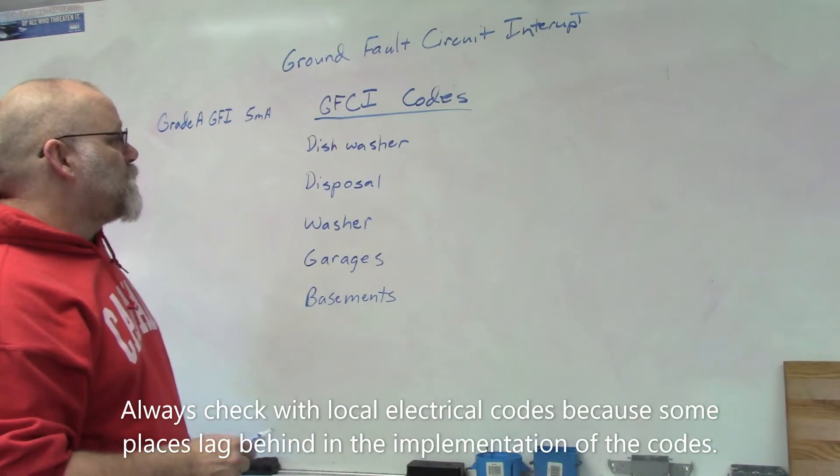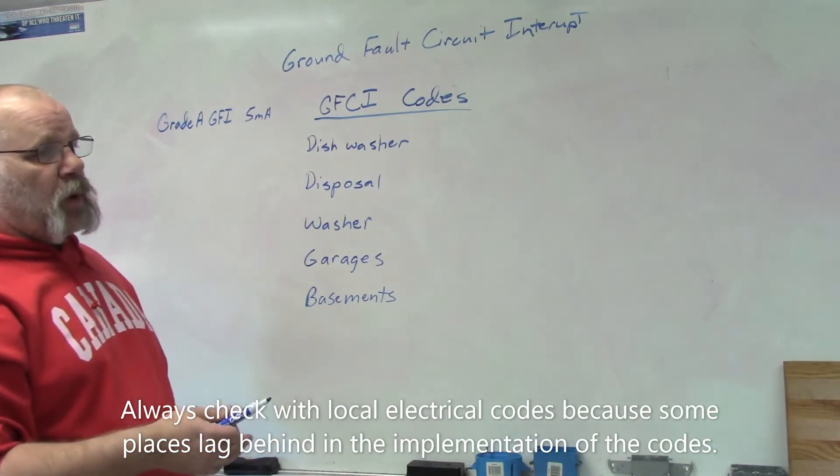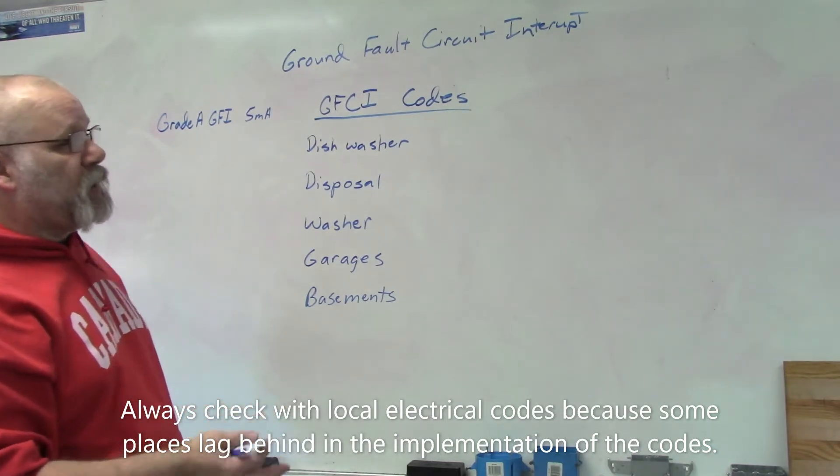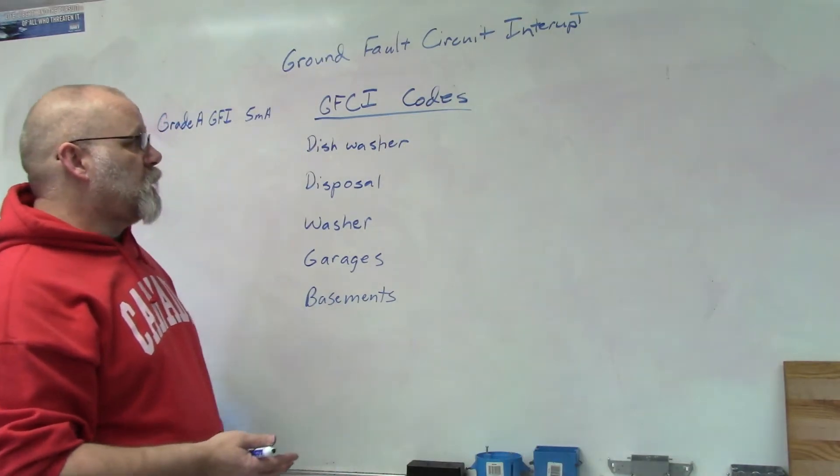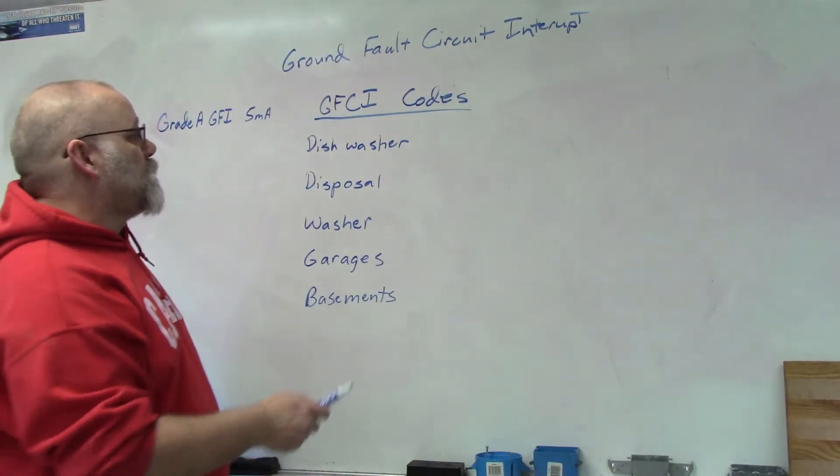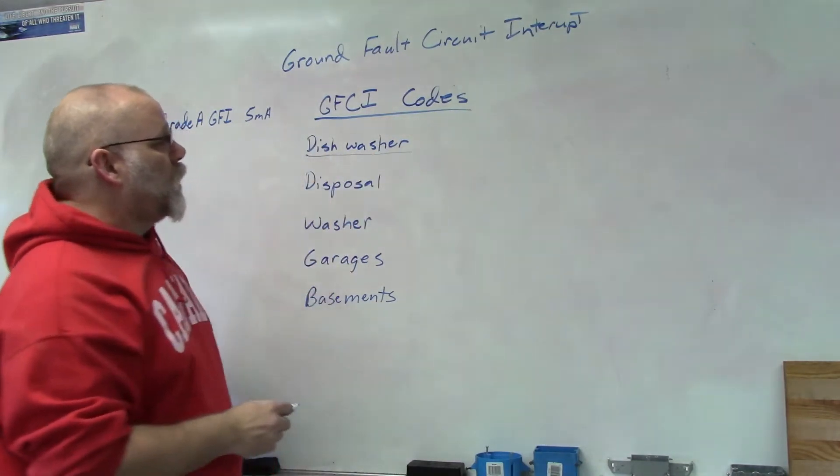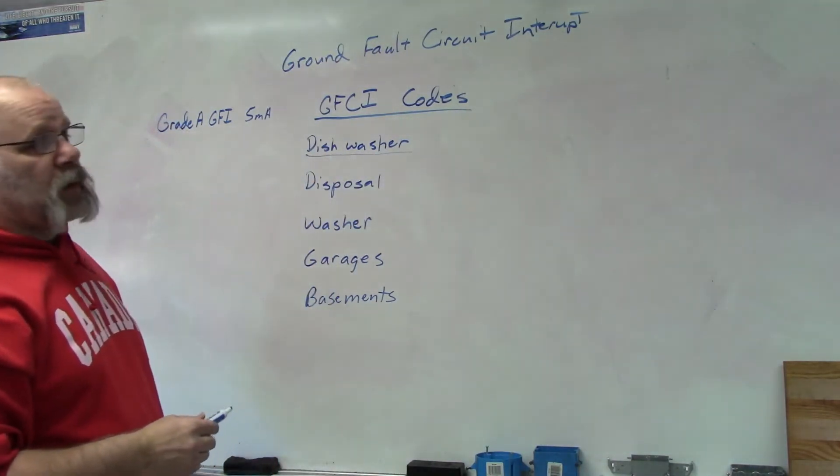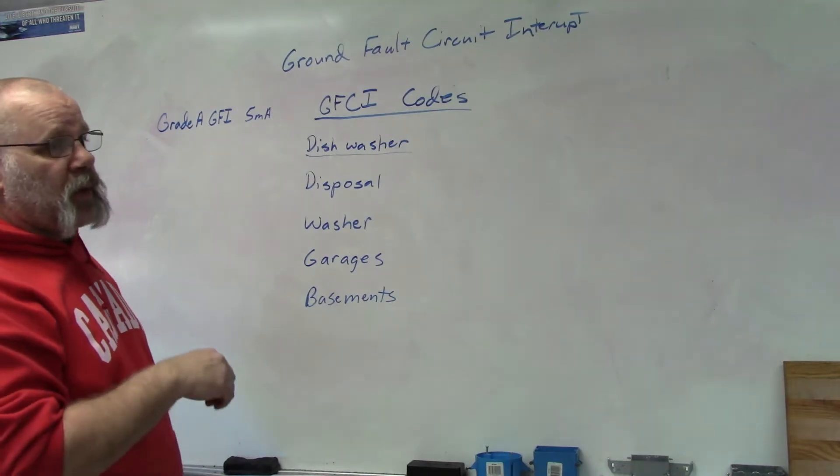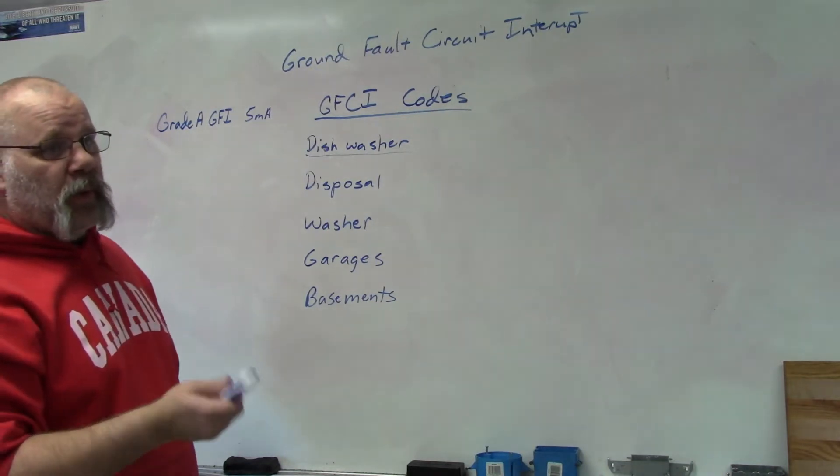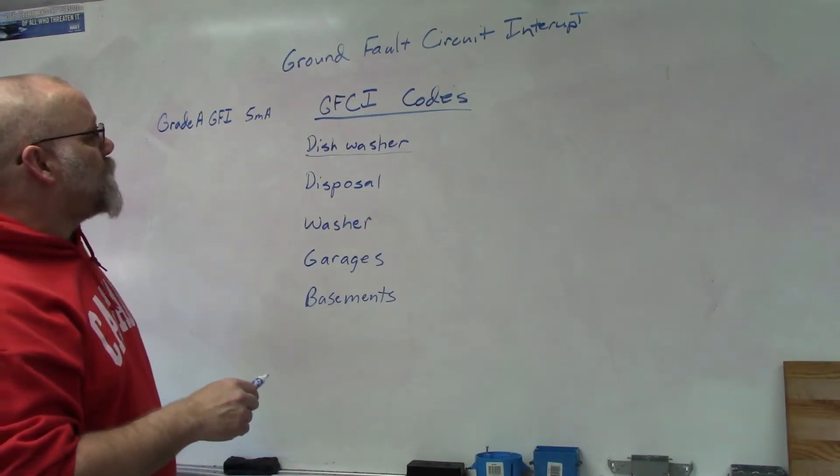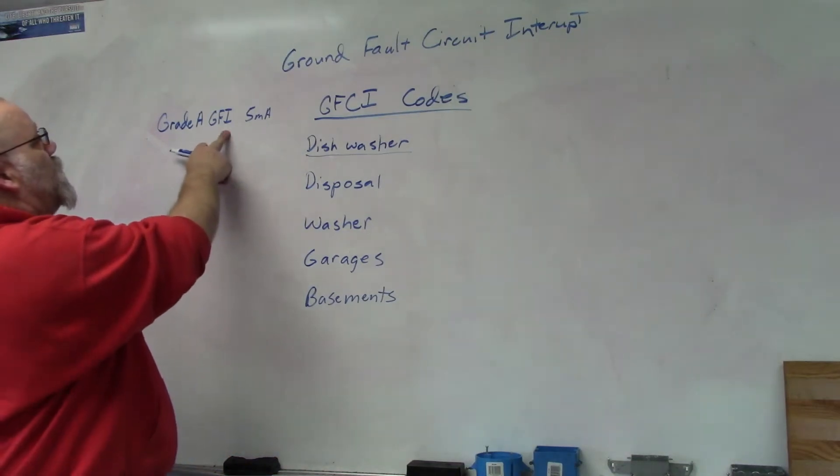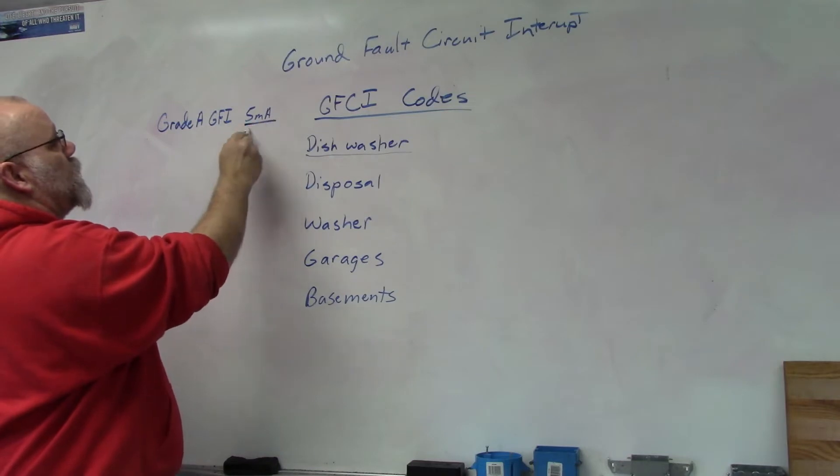So that means things that weren't on a GFCI before, or may not have been on the GFCI before, are now with the 2020 codes. Dishwasher is one that needs to be on a GFCI. It can be either hardwired or it can be plugged in. It has to have a GFCI which is tripped at five milliamps.